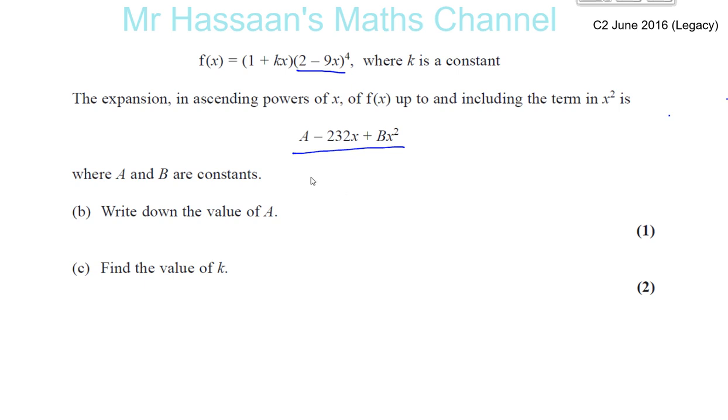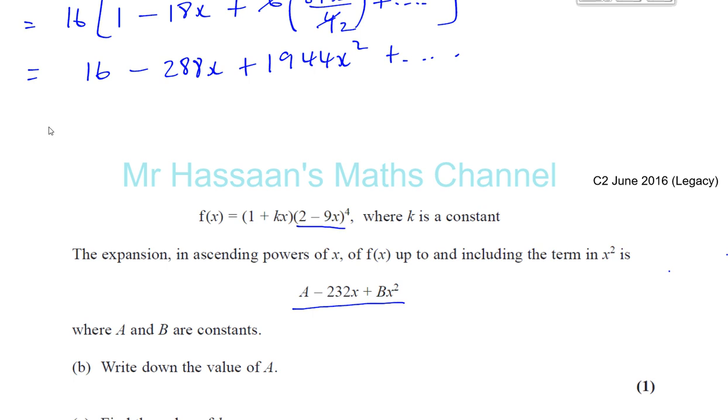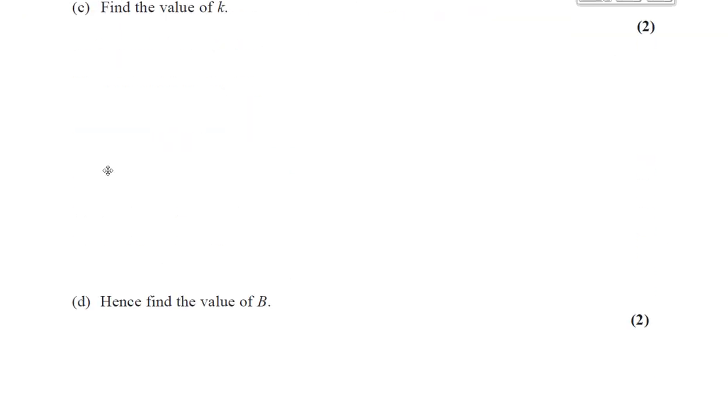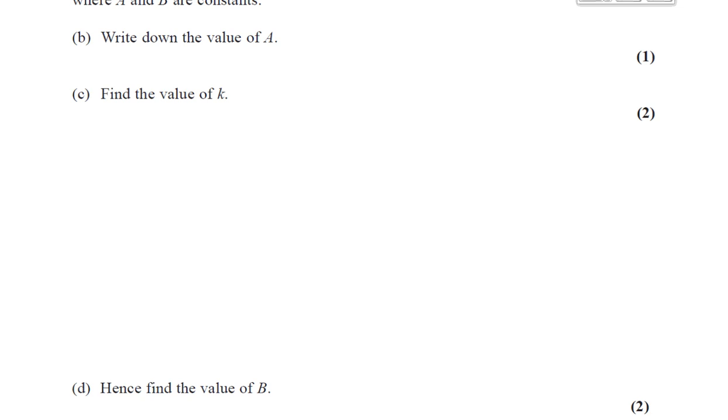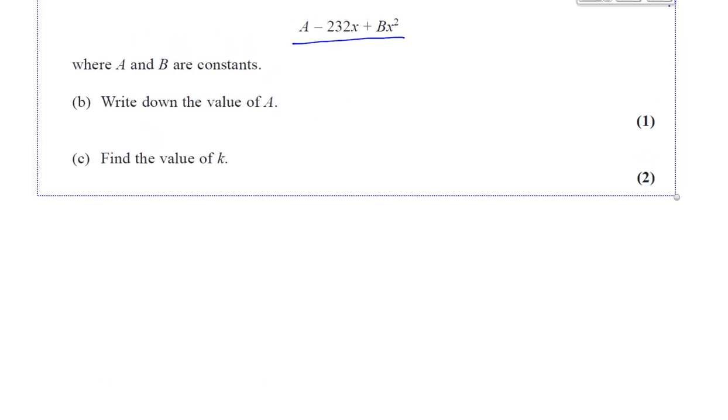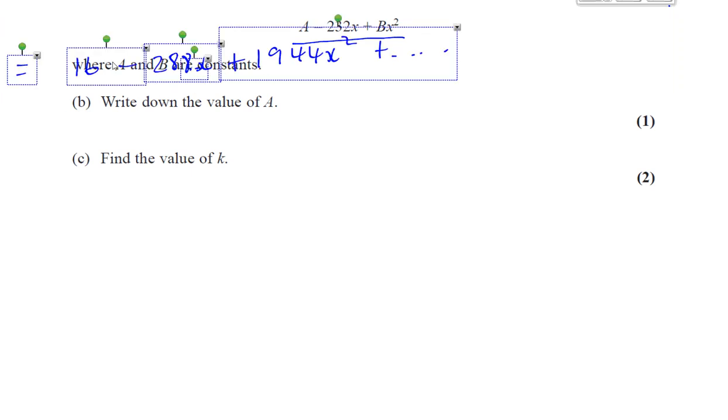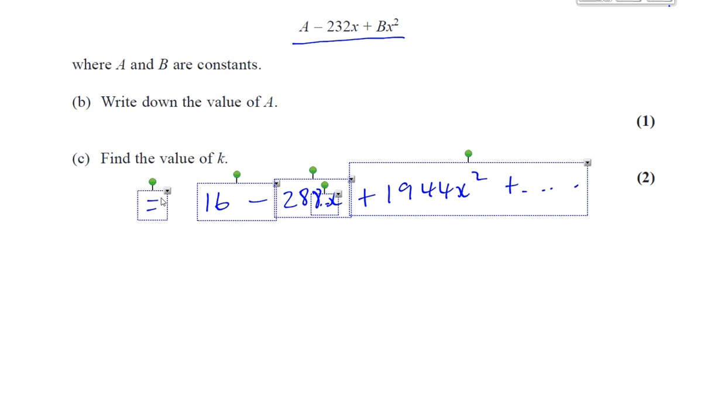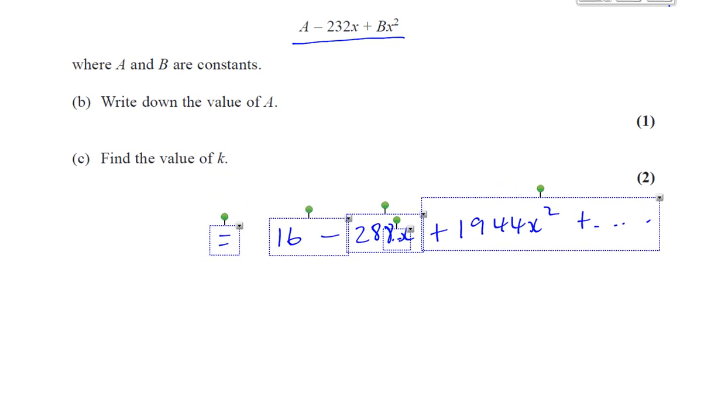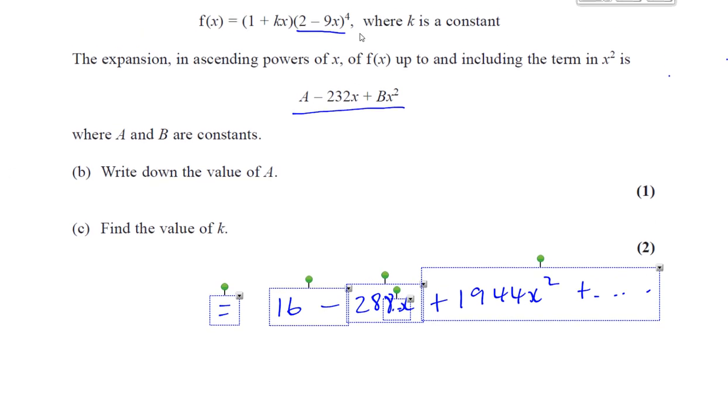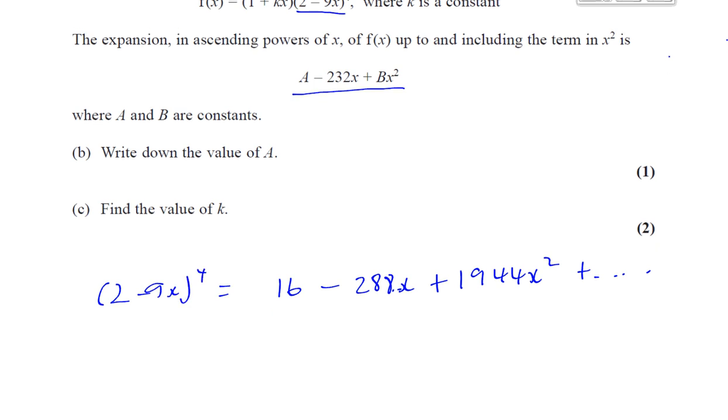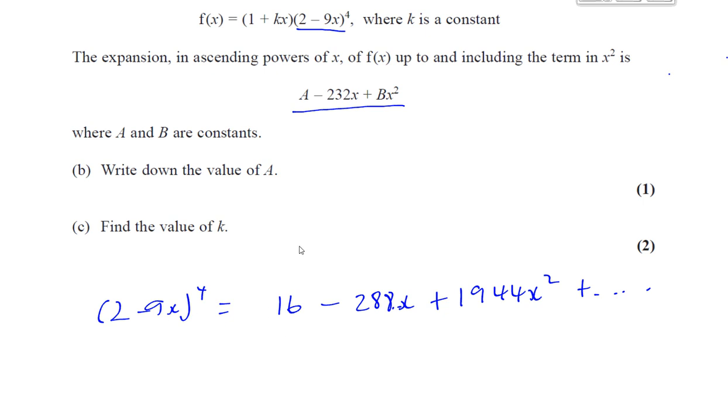We've got to write down the value of a, so let's first of all, let's go back to get what we did before. This is the answer that we had from before. Let me just copy it and paste it down here. So that's what we got when we expanded 2 minus 9x to the power, 2 minus 9x, all to the power of 4.